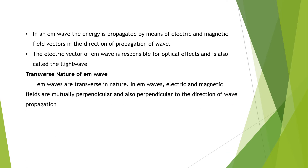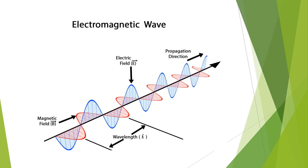EM waves are transverse in nature. That means the electric field vectors, magnetic field vectors, and their propagation direction are all mutually perpendicular to each other. This is the representation of an electromagnetic wave — the magnetic field vector is shown in red and the electric field in blue, with propagation in the third direction. Both fields are in phase: you can see matching maximum and minimum points, and the distance between two troughs gives the wavelength λ.